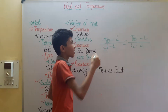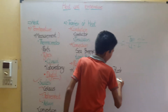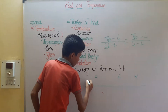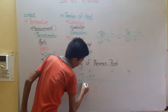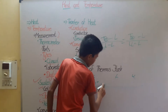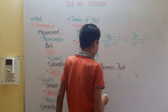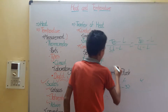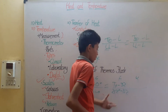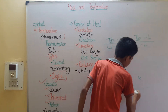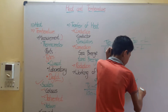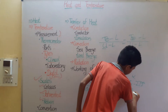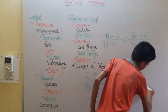Applying this to Celsius, Fahrenheit, and Kelvin: (C minus 0) divided by (100 minus 0) equals (F minus 32) divided by (212 minus 32), and equals (K minus 273) divided by (373 minus 273).